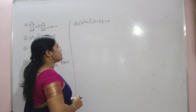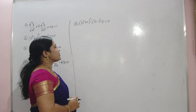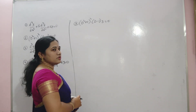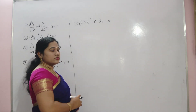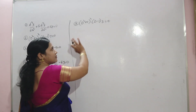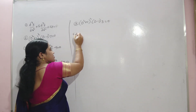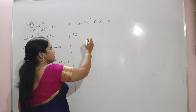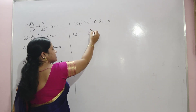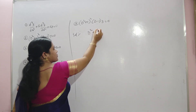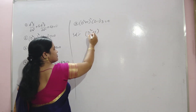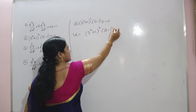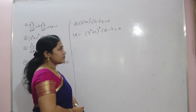The next problem is: (D² + 1)²(D − 1)y = 0. The symbolic form is already given. The auxiliary equation is (D² + 1)²(D − 1) = 0.